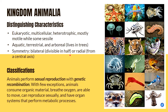The last kingdom is Kingdom Animalia, and its distinguishing characteristics are: eukaryotic, multicellular, heterotrophic — meaning they must feed on others. They are mostly motile while some are sessile, or rooted to a spot. They are mostly aquatic, terrestrial, and arboreal creatures — arboreal meaning they live in trees.